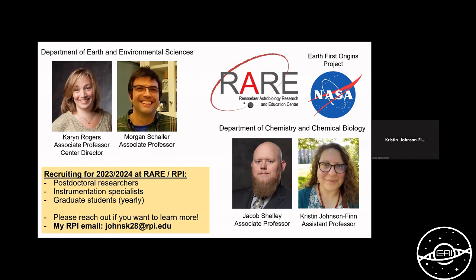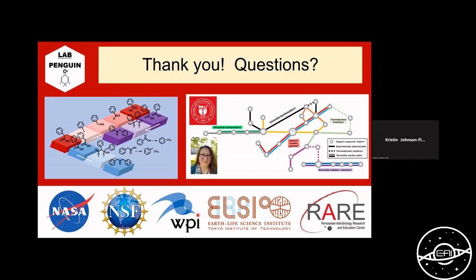Here's the shameless plug that I promised at the beginning. The Rensselaer Astrobiology Research and Education Center is a newly forming astrobiology center in Troy, New York. It is funded by the Earth First Origins Project, which is a NASA grant involving collaborators from across the country. For the 2023-2024 year, we are currently trying to recruit more postdoctoral researchers, instrumentation specialists, graduate students, which will be on a yearly basis recruiting. If you would like to learn how to get involved, how to collaborate, or anything else, I've placed my RPI email here. So please feel free to reach out. It was a great pleasure for me to speak to you today. Thank you very much, and let me know if you have any questions.